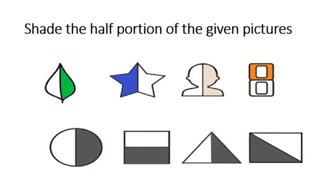Shade the half portion of the given pictures. The shapes above are divided into 2 equal parts. In the 2 equal parts, 1 part is shaded. The shaded portion is 1 half, and the unshaded part is another half.